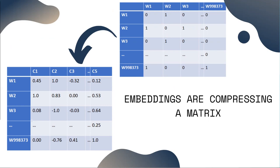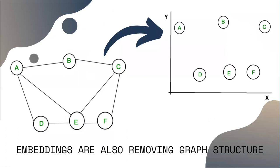Another way to think about it: when you grab that embedding you're actually destroying all the edges in the graph and just putting the graph's nodes on a coordinate system — obviously a 100-dimensional coordinate system, but it's still the same idea. So instead of hard relations you have soft, loose relations between your nodes. It's important to think about embeddings as both dimensionality reduction on a matrix AND destroying structure from a graph into a looser structure simultaneously.